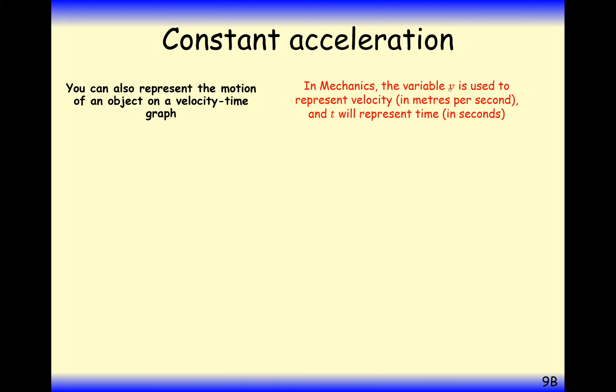In mechanics we label velocity as v and time as t. A graph that looks like this, where the line is on the bottom axis here, means the velocity is zero throughout the whole time that this action is being taken. So the object is stationary.